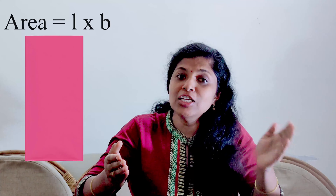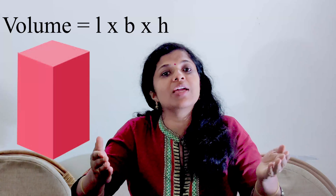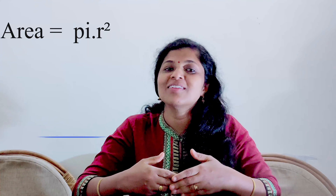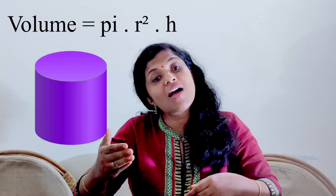For our cuboid, the cross-sectional area is the area of the rectangle, that is L × B. Multiply that with the height and we get L × B × H. And so you can see that if our cross-sectional area is a circle of area π R², then our solid will be a cylinder and volume will be π R²H. If you try to understand math like this, you will no longer have to memorize formulas.